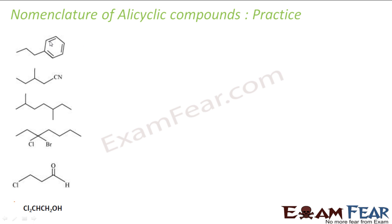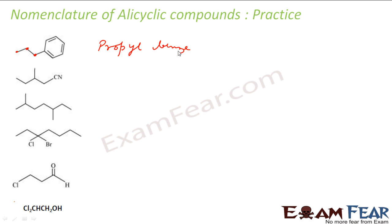This is benzene, and we have one, two, three carbons — that is propyl. So benzene with a propyl alkyl group: this is propylbenzene.